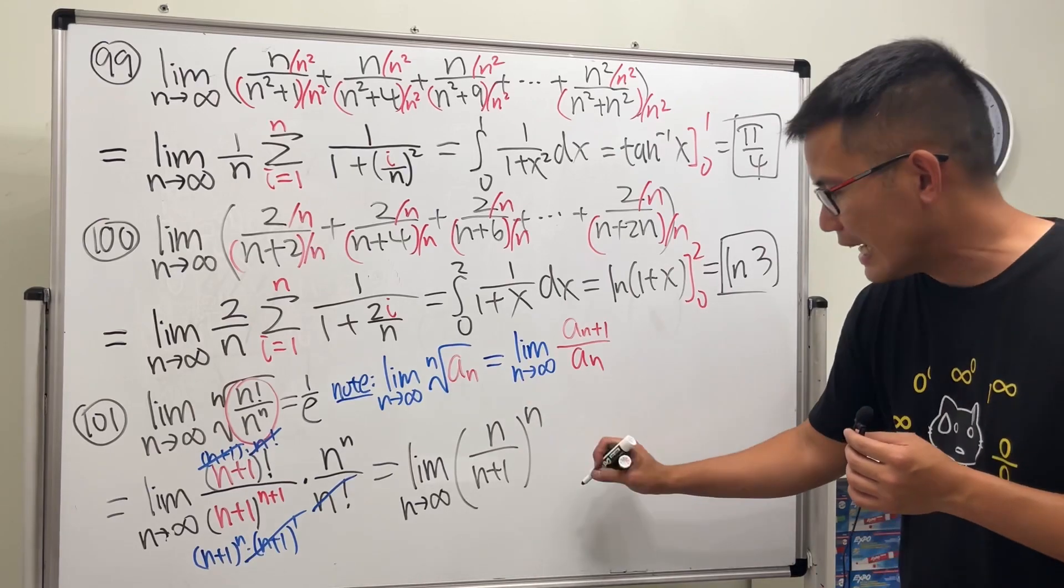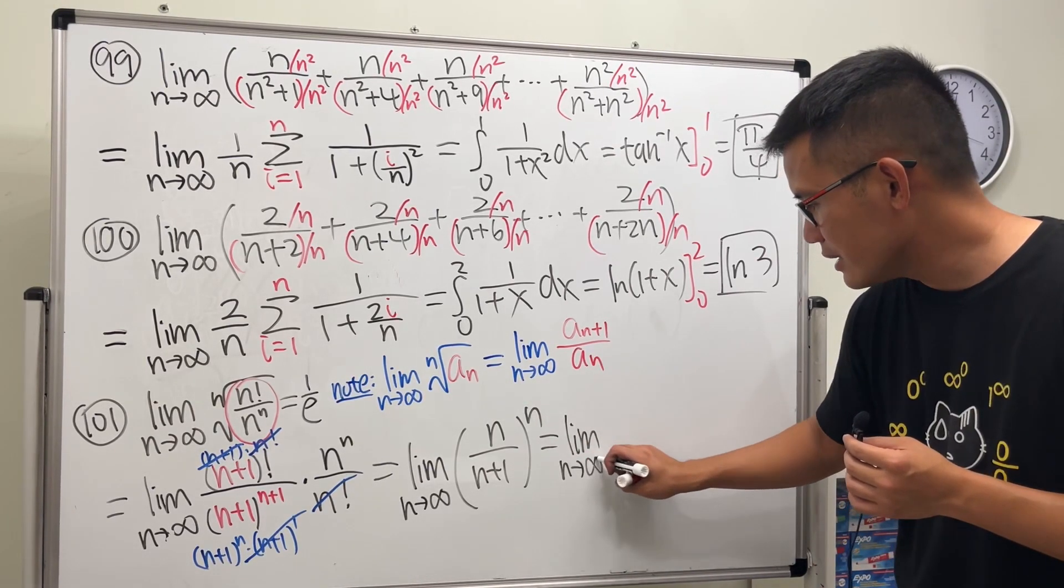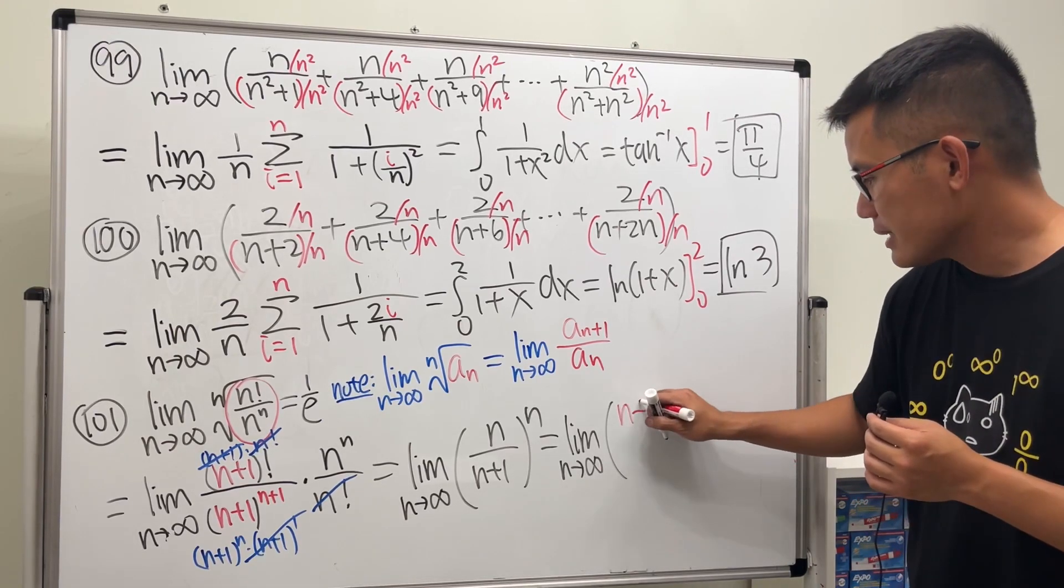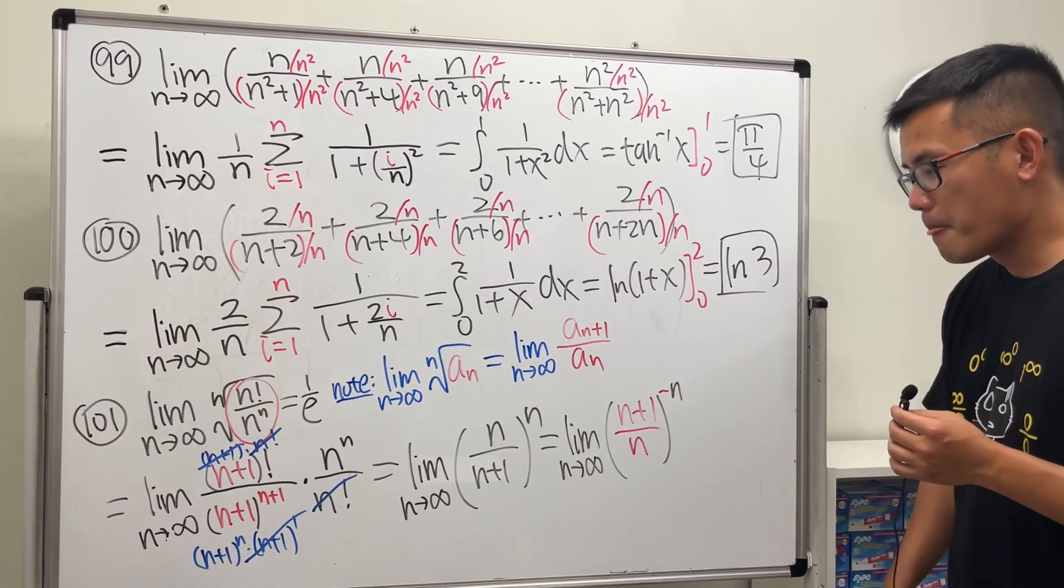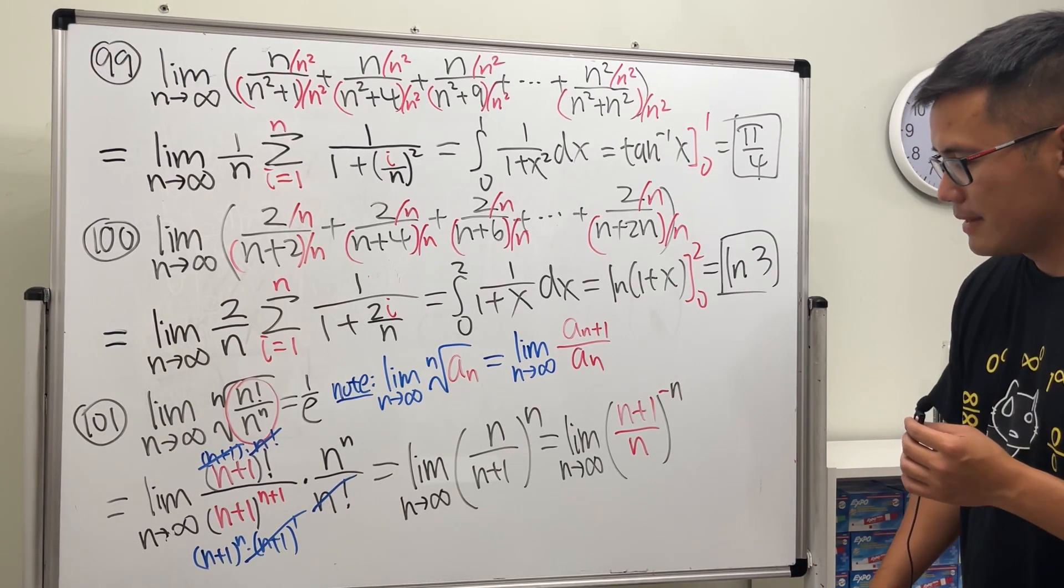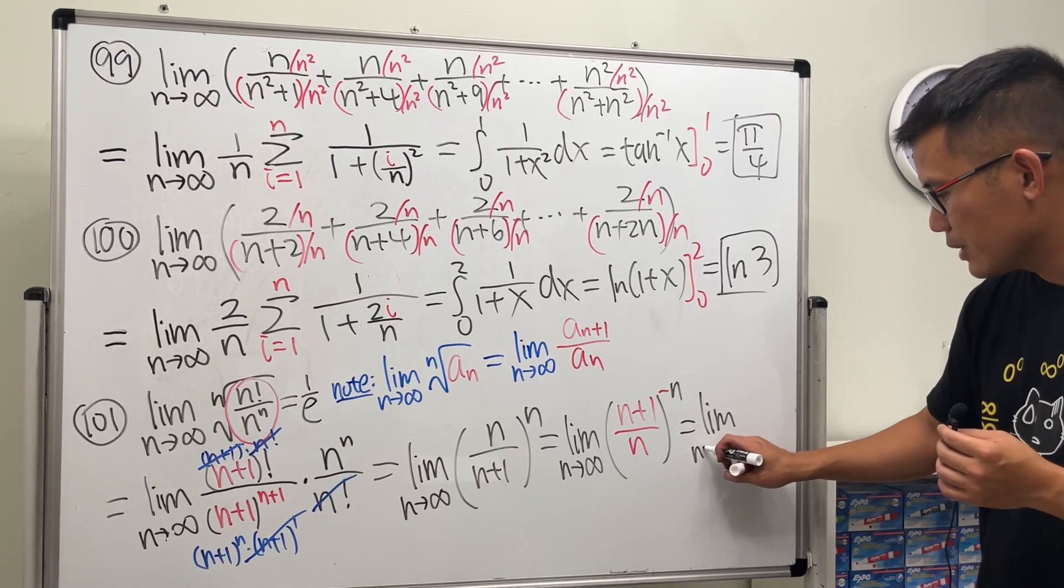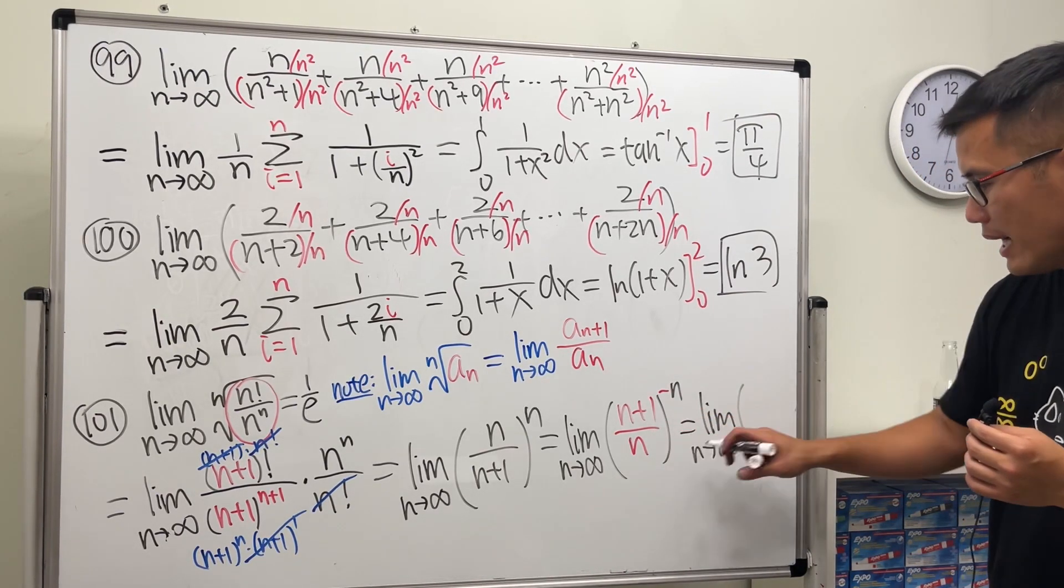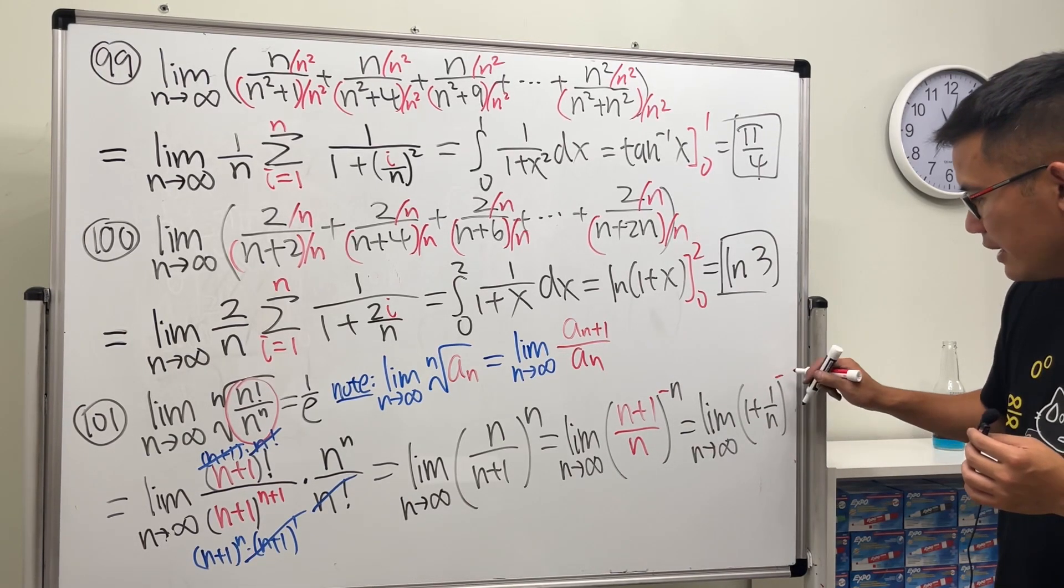Flip this, negate that. Here, this is the limit as n goes to infinity, n plus 1 over n raised to the negative nth power. And you know it, this right here is just the limit as n goes to infinity, 1 plus 1 over n raised to the negative nth power.